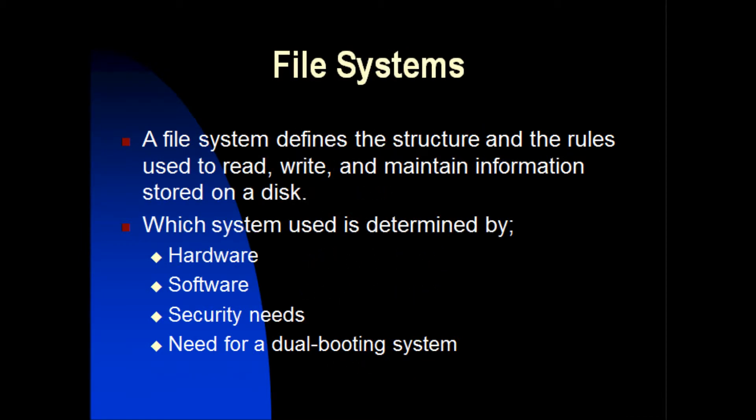File systems. A file system defines the structure and the rules used to read, write, and maintain information stored on a disk. Which file system is used is determined by: first, hardware; second, software; third, security needs; and fourth, the need for a dual booting system.